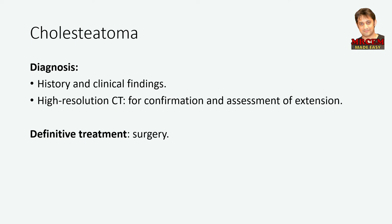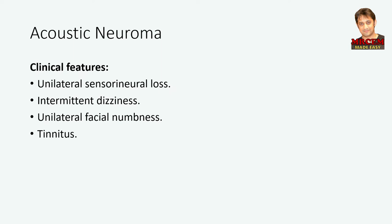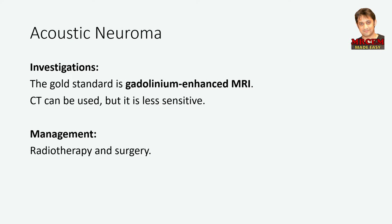Let's move to acoustic neuroma. Acoustic neuroma is a benign cerebellopontine angle tumor that grows from the superior vestibular component of the vestibulocochlear nerve. The clinical features include unilateral sensorineural hearing loss, intermittent dizziness caused by cerebellar compression or vestibular dysfunction, unilateral facial numbness caused by compression of the trigeminal nerve, tinnitus, and other symptoms such as headache, diplopia, and nystagmus. The gold standard for diagnosis of acoustic neuroma is gadolinium-enhanced MRI. CT can be used but is less sensitive. The management is by radiotherapy and surgery. Chemotherapy is not effective here.